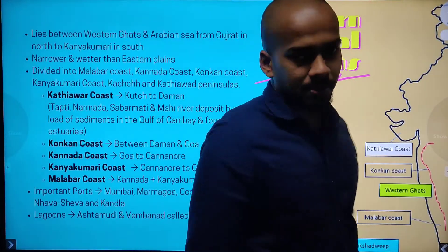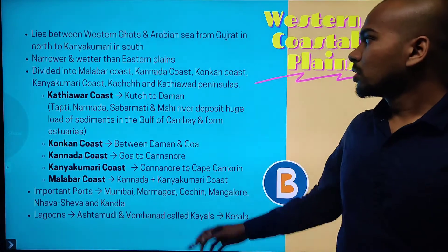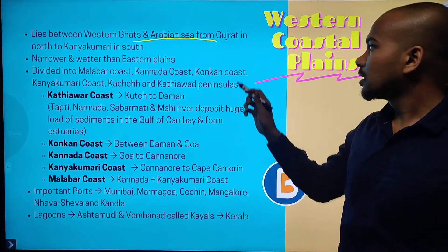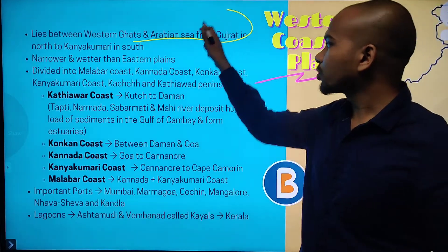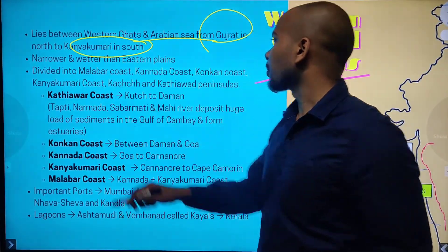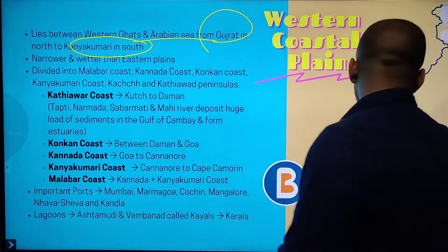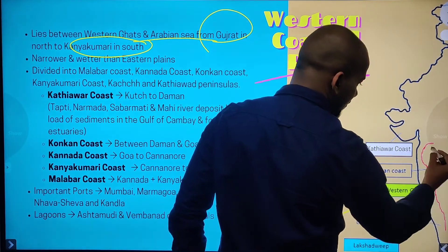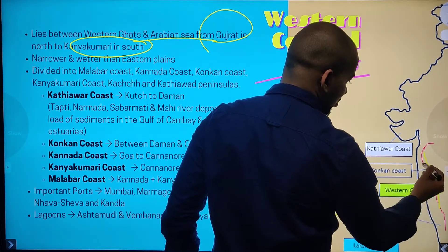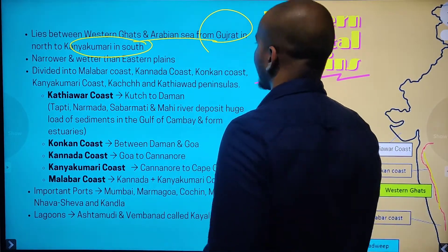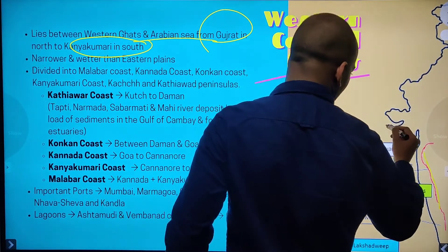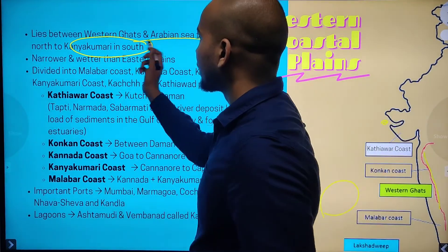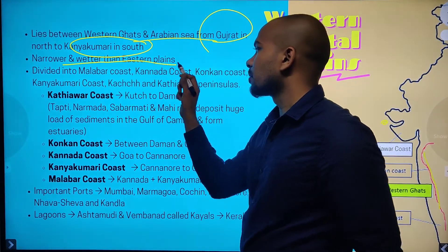Firstly, we will look at the western coast. It lies between the western coast and the Arabian Sea, from Gujarat in the north to Kanyakumari in the south. As you can see, here is the Arabian Sea and here is the western coast, so in between that area we have the coastal plains. The north point is the Gujarat Kutch area to Kanyakumari. It is narrower and wetter than the eastern plains.